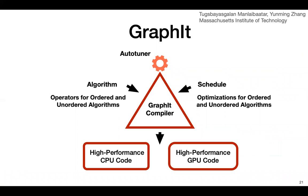GraphIt is another system I'm watching very closely. It comes from the same group at MIT that brought us Halide, which had a huge impact on the visual computing world. You express an algorithm in a DSL designed around programmability, then separately define a schedule to specify optimizations. This lets you map onto a wide range of hardware including CPUs and GPUs just by changing the schedule. You can even hook in an auto-tuner to learn optimal schedules.